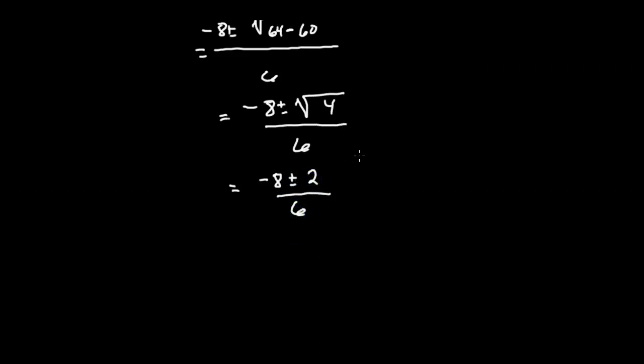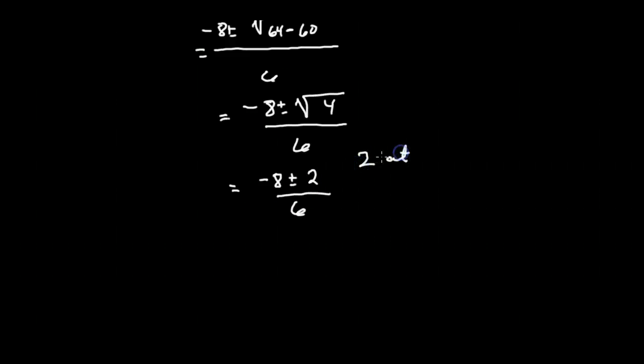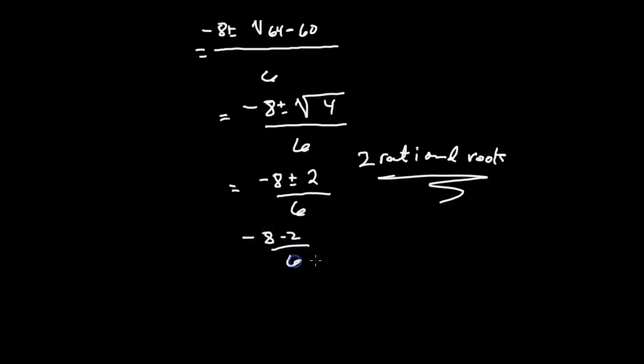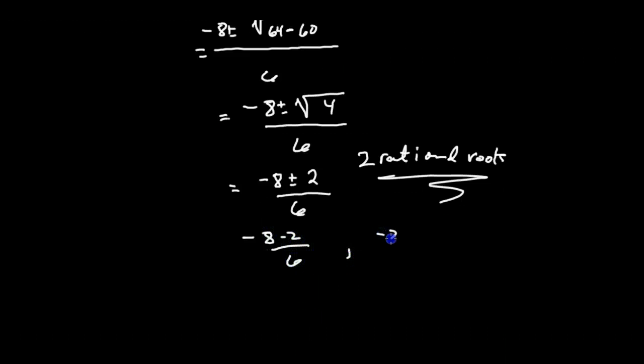Now because I've got nothing in the radical, I know that I have two rational roots. And let's see what those are. There is negative 8 minus 2 over 6. And then there will be negative 8 plus 2 over 6.